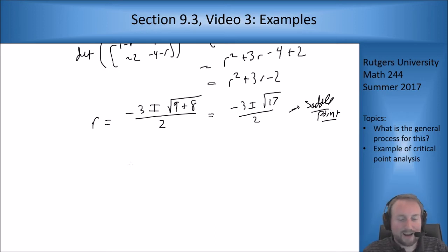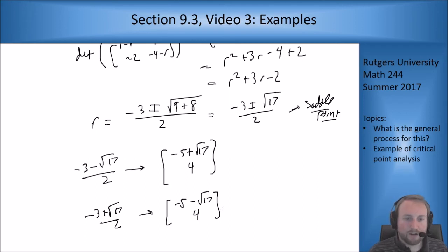If you solve for the eigenvectors, you get something nasty but the eigenvectors look like these. For those eigenvalues, this one comes in and this one goes out in terms of the direction of the saddle point.